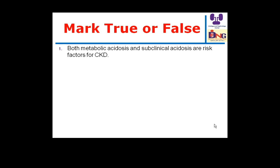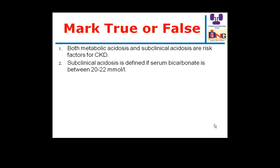What about subclinical metabolic acidosis — how to diagnose it? By lab only, not manifest in the patient. By ABG, pH below 7.35? Or by bicarbonate level? Subclinical acidosis is defined as serum bicarbonate between 20 to 22.